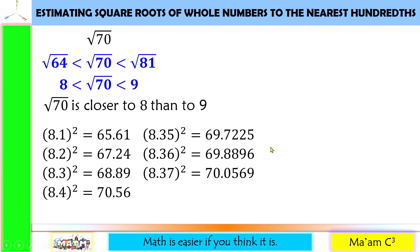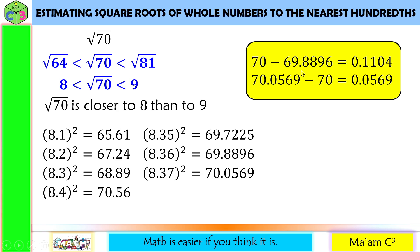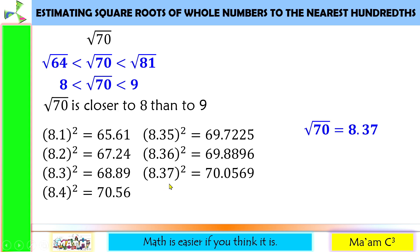So these are the two numbers closest to 70. I'm going to determine which one is closer. I will just subtract: 70 minus 69.8896 is 0.1104, and 70.0569 minus 70 is 0.0569. The smaller difference is 0.0569, so 70.0569 is closer to 70 than 69.8896. Therefore, the square root of 70 is equal to 8.37.